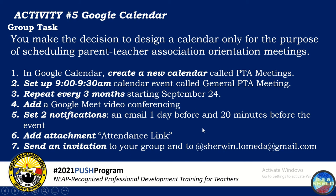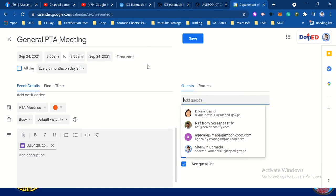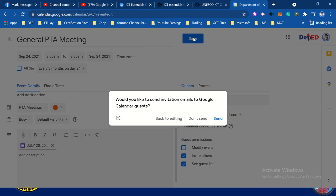To recap: create a new calendar called PTA Meetings, set up 9 to 9:30 a.m. event, repeat every 3 months, add Google Meet, set 2 notifications — email one day before and 20 minutes before the event, add the attachment, then send the invitation. Click save, then click send.